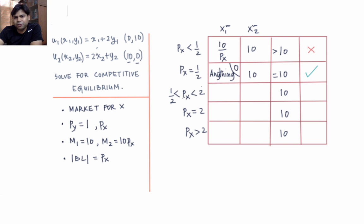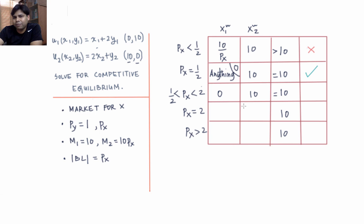When px is between 1/2 and 2, consumer 1 will choose 0 units of x because px is greater than 1/2. Consumer 2 will spend all income on x and choose 10px divided by px, which equals 10 units of x. Since 0 plus 10 equals 10, the market for x clears at any px between 1/2 and 2 — this entire range constitutes competitive equilibrium.